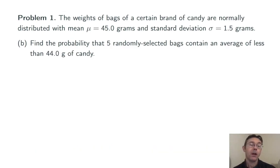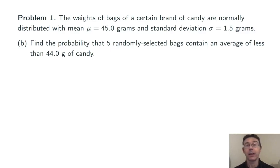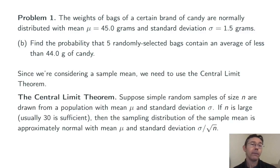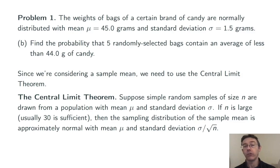Part b: find the probability that five randomly selected bags contain an average of less than 44 grams of candy. This is a question that asks for a probability for a sample mean, and so we need to address it using the central limit theorem, which goes like this.